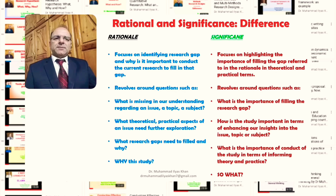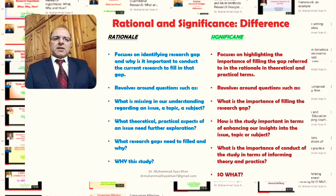The first question is: what is missing in our understanding regarding an issue, a topic, or a subject? This is something that researchers will find out when they have background knowledge or when they actually do the literature review. They will find what is missing regarding a particular aspect or aspects of the topic that needs to be further explored.